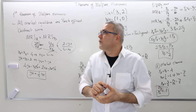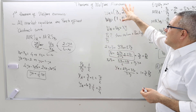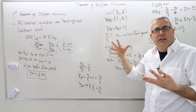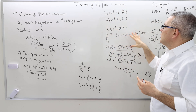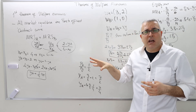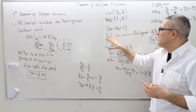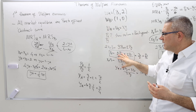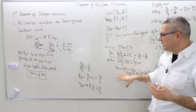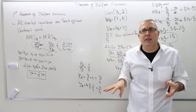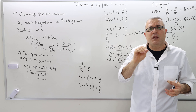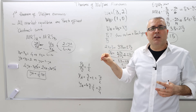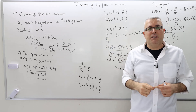For any initial endowments, as long as the utility functions are well-behaved, you get the same result: the Walrasian equilibrium price ratio gives optimal X and Y for agents A and B, and those allocations must be Pareto-efficient.